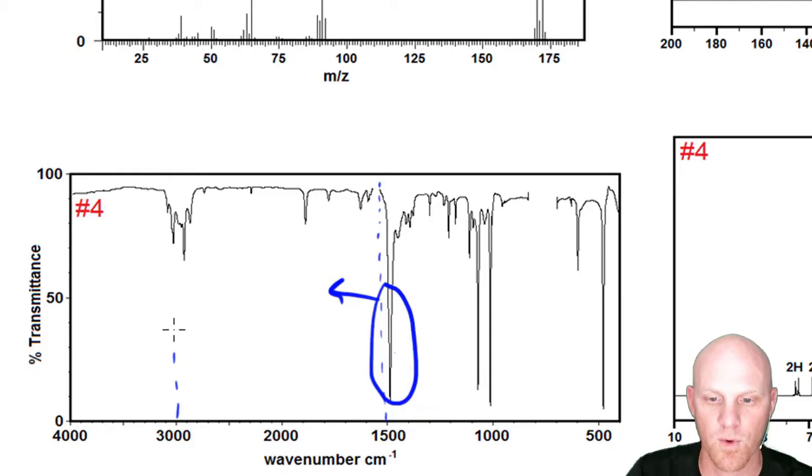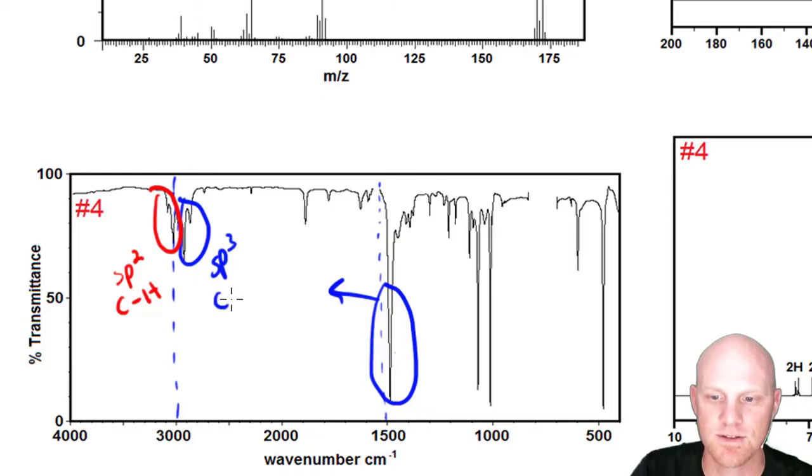We've got peaks both on the right and on the left of 3,000. The ones immediately to the left are the sp2 C-H bonds, and the ones immediately to the right are the sp3 C-H bonds. Having these sp2 C-H bonds is either usually part of an alkene or part of an aromatic ring.